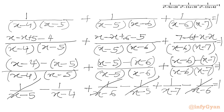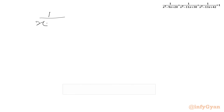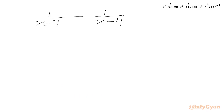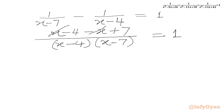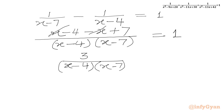Let us write: 1 over (x minus 7) minus 1 over (x minus 4) equals 1. Now we will take LCM. We write the product of both denominators (x minus 4)(x minus 7) in the denominator. In the numerator we can write (x minus 4) minus (x minus 7), which is minus x plus 7, equals 1. So plus x minus x cancels and 7 minus 4 gives 3 in the numerator, giving 3 over (x minus 4)(x minus 7) equals 1.